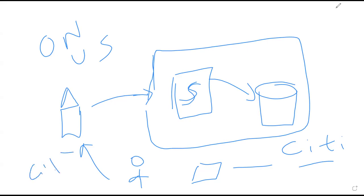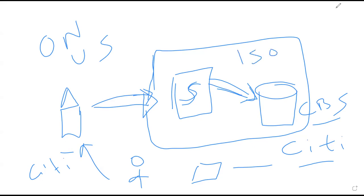This ATM also belongs to Citi. This on-us transaction is routed from the ATM to the switch using some proprietary language. What we are more interested in is how the switch software connects to the CBS, or Core Banking software. This is through a protocol known as ISO 8583. ISO 8583 is the protocol by which the switch integrates with the CBS. Let's understand a bit more about this ISO protocol.